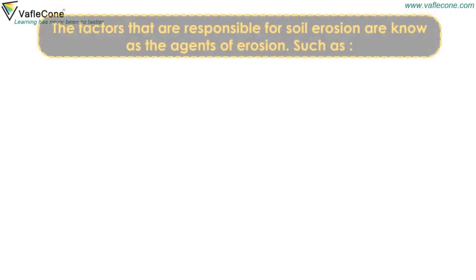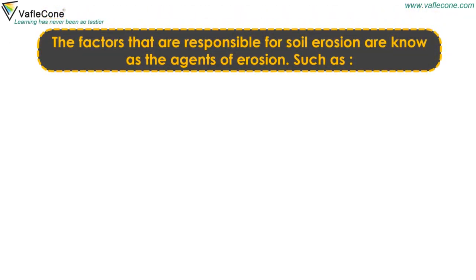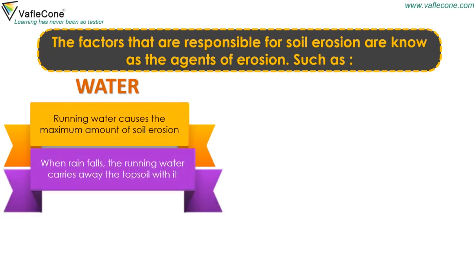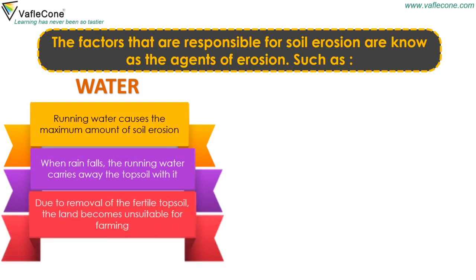The factors responsible for soil erosion are known as the agents of erosion, such as water. Running water causes the maximum amount of soil erosion. When rain falls, the running water carries away the topsoil with it. Due to removal of the fertile topsoil, the land becomes unsuitable for farming.